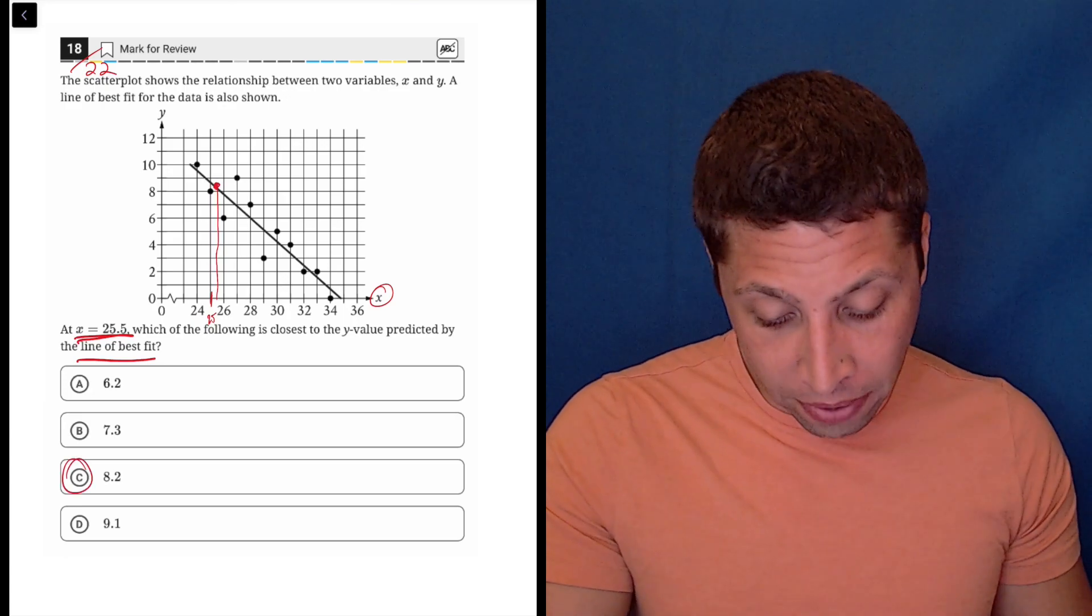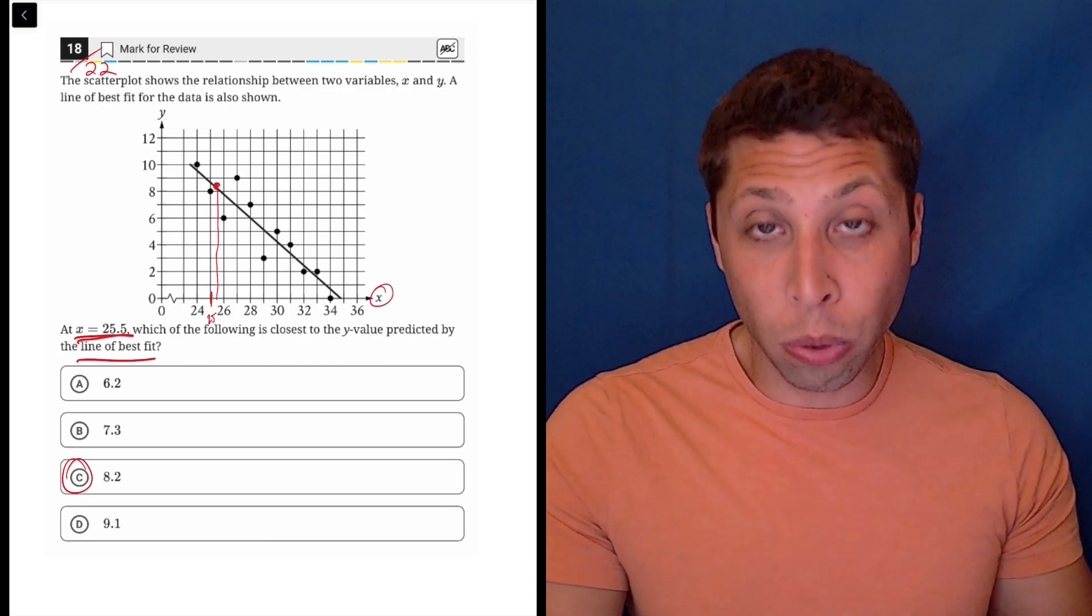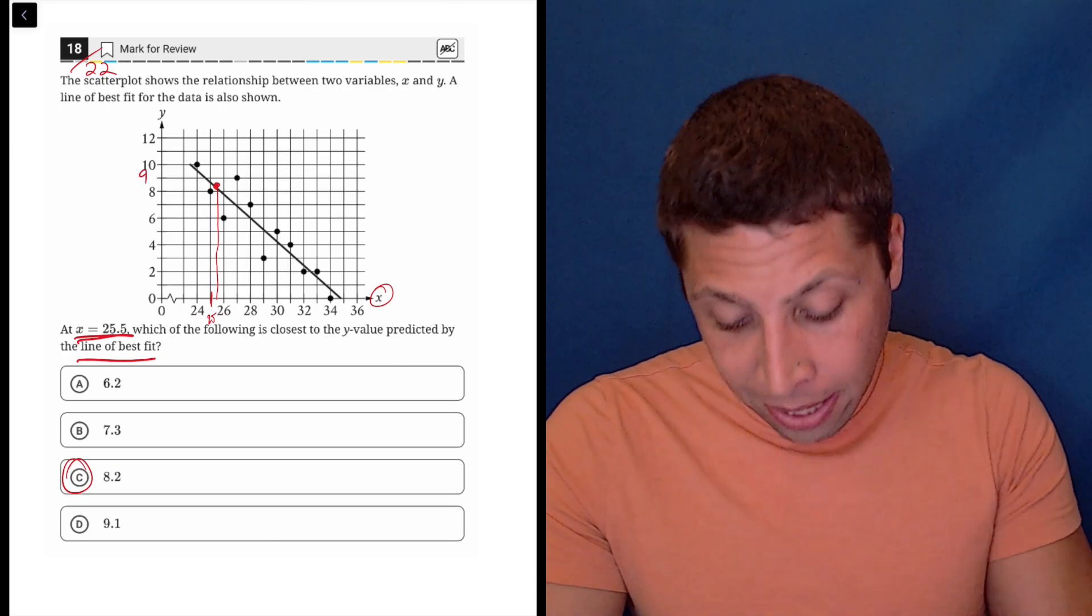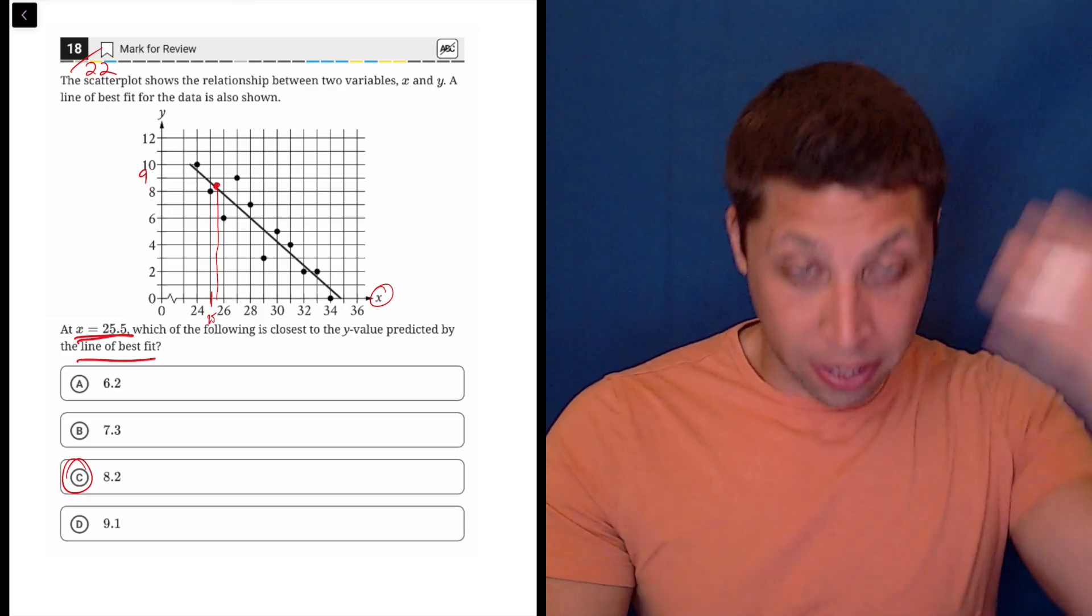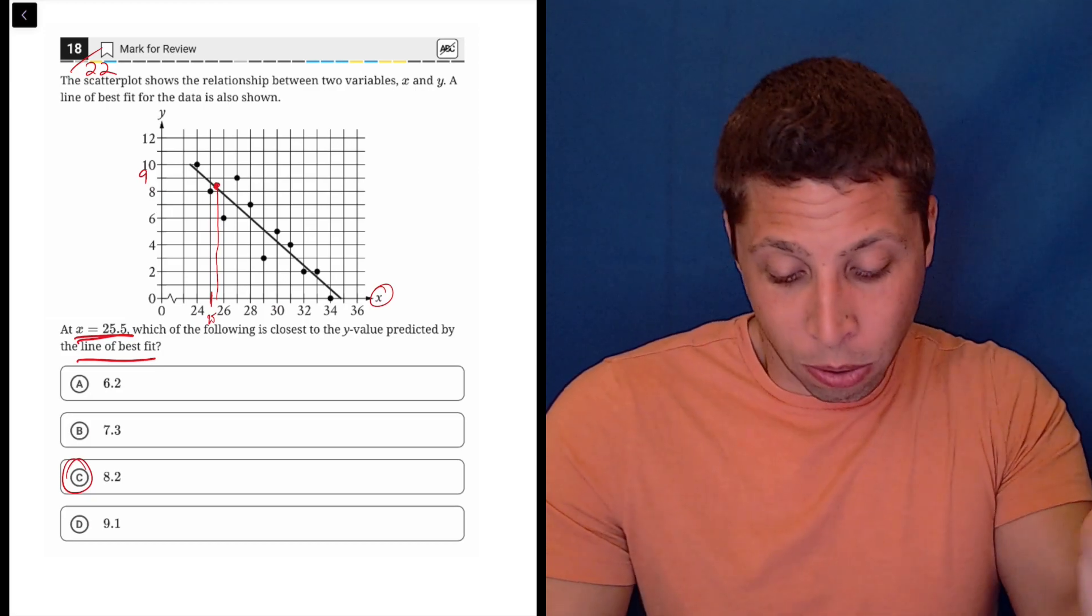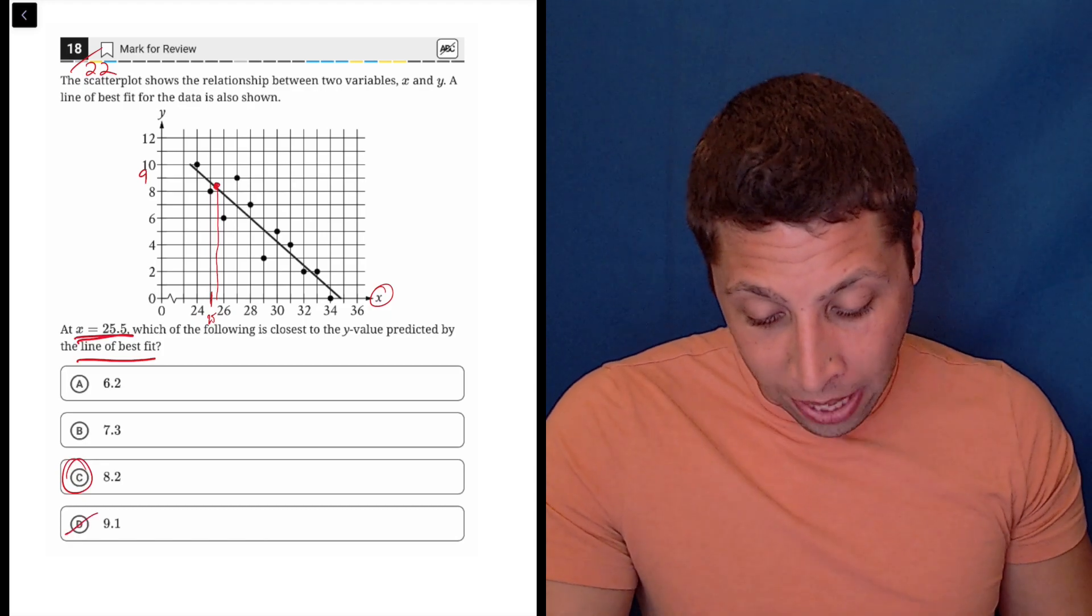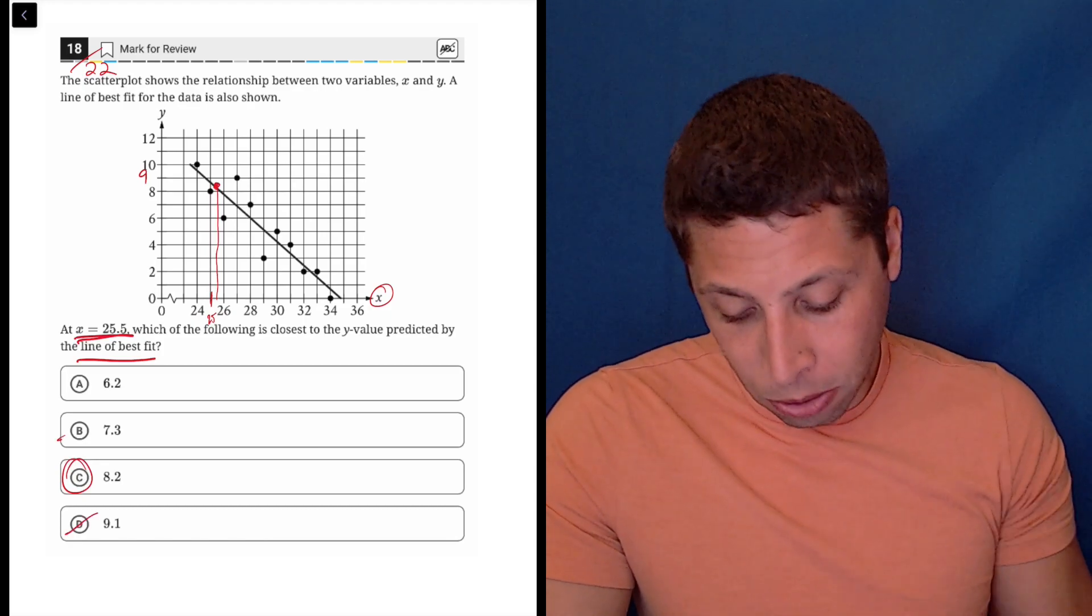Well, choice C is a little bit above eight. Now, maybe just make sure that you're following the scale right. The line in between the eight and the 10 obviously is nine, and it's not up to that point. So it's less than nine. So it can't be D. And the seven line is way too low.